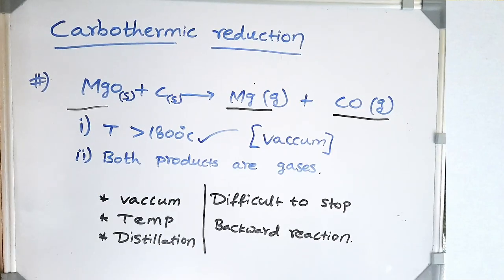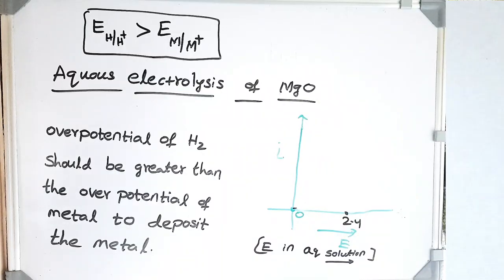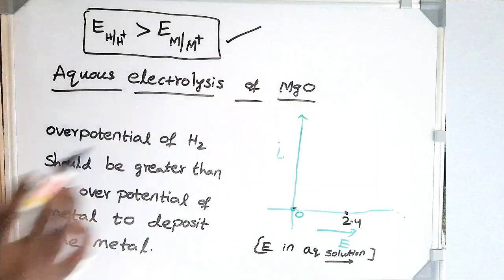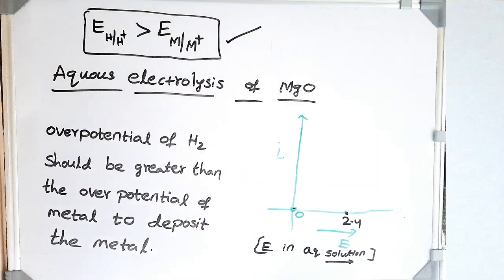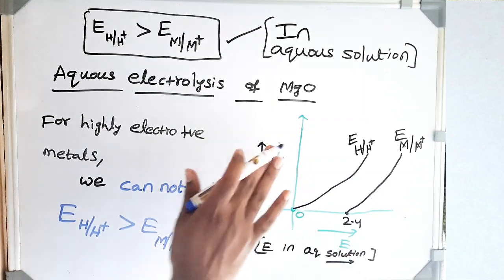Carbon reduction has been ruled out because we need so many conditions but still fail to stop the backward reaction. Now let's look at why we can't produce magnesium using electrolysis of aqueous solution. To deposit any metal from aqueous solution, the overpotential of hydrogen must be greater than the deposition potential of the metal.